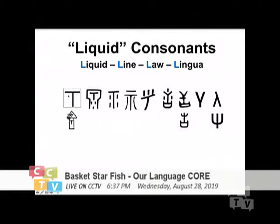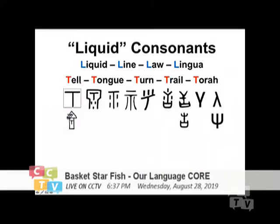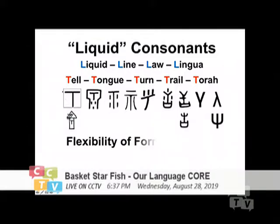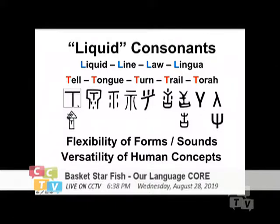From today, I want you to look at this T form. Instead of the letter connecting to water, I want you to see there are many different ways of looking at the heart symbol. You can look at it as turning around. After you watch this program, you'll understand why the word 'tell,' or the tongue, or the word 'turn,' or the 'trail,' or the Torah — the Hebrew law Bible — all started with this. You will see that this is actually a visual symbol from the very beginning. You have to understand the flexibility of forms and sounds. The more simple a form is, the more versatile it is in leading to our human concepts.